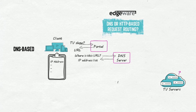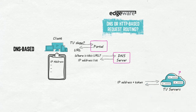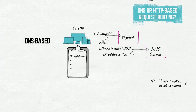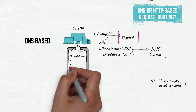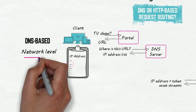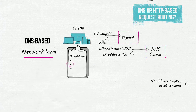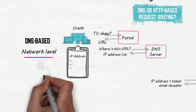If the server has the requested content and is available, the content is streamed to the client device. If the server doesn't have the requested content or isn't available, the request is repeated to the next server on the list. DNS routing uses IP-level information and was initially built for web surfing, not for streaming video.